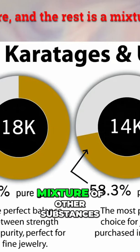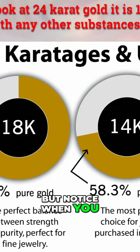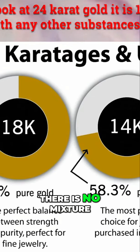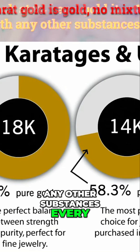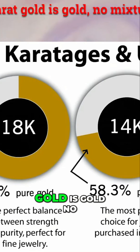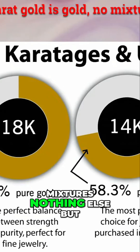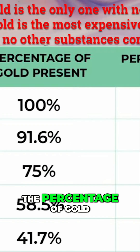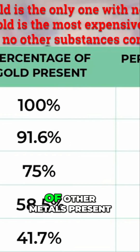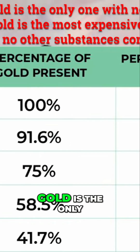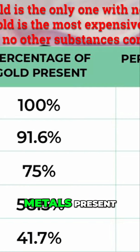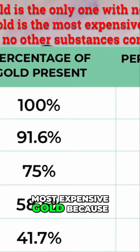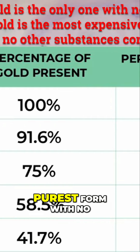18 karat gold is 75% pure, and the rest is a mixture of other substances. But notice when you look at 24 karat gold — it is 100% pure. There is no mixture of this gold with any other substances. Here is another chart that shows the percentage of gold present and the percentage of other metals present. Notice that 24 karat gold is the only one with no other metals present. This is why 24 karat gold is the most expensive gold — because it is in its purest form with no other substances combined with it.